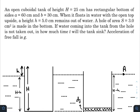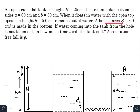Hey, what is up everyone! In today's question: an open cuboidal tank of height H has a rectangular bottom of sides a and b. When it floats in water with the open top upside, a height h remains out of the water. A hole of area S is made in the bottom. If water coming into the tank from the hole is not taken out, in how much time T will the tank sink? Acceleration of free fall is given as g.